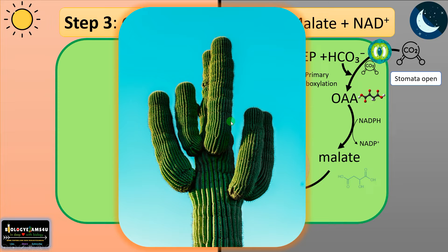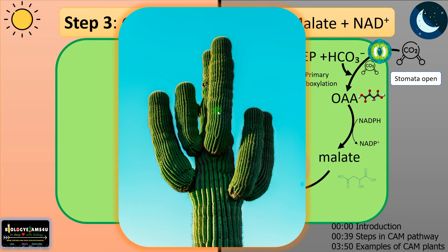How does this giant cactus, living in the desert — one of the harshest environments on the planet — perform photosynthesis? Survival in the desert is equal to their ability to conserve water. The major problem faced by these plants is during daytime: because of high temperature, these plants must close stomata to prevent water loss by transpiration. Then how do they get carbon dioxide for the Calvin cycle or synthesis of glucose?